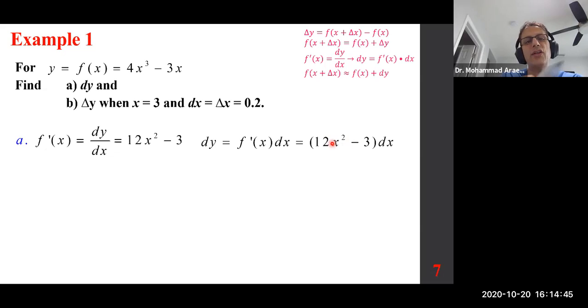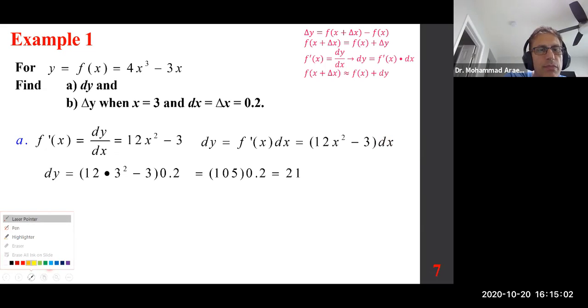Now we want to evaluate it. What is x? Replace it with 3. What is delta x or dx? Replace it with 0.2. So the next part is basic math. Plug in. Order of operations. Evaluate. I'm assuming everybody can do that. Of course, quickly. This is 9, this is 108, minus 3 becomes 105. Big deal. So nobody has any problem with that.